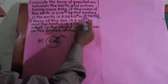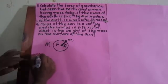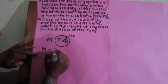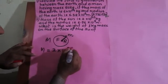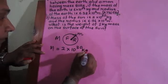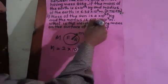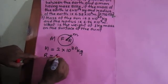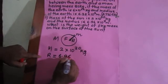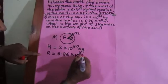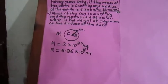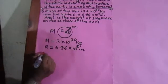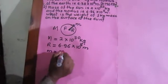Mass of the sun is this much. It means the bigger mass, capital M, is equal to 2 × 10³⁰ kilogram. And the radius: R is equal to 6.96 × 10⁸ meter. What is the weight of one kg mass on the surface? It means the small mass, small m, is one kilogram.